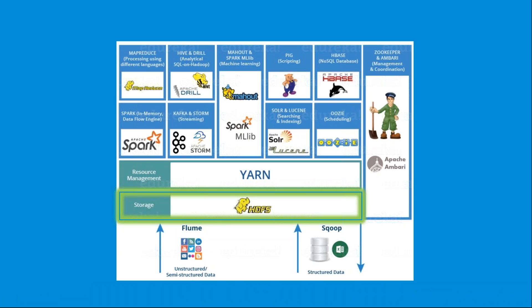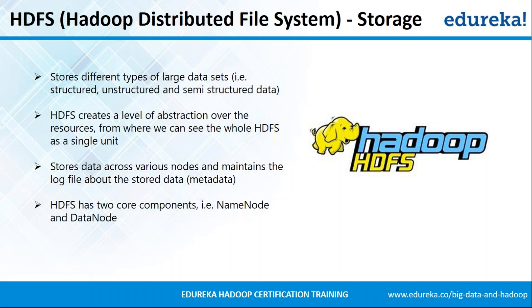The very first tool we'll understand is HDFS — Hadoop Distributed File System — which is the storage unit of Hadoop. HDFS is the entire Hadoop cluster formed by data nodes, which are commodity hardware that can be clustered together using the Hadoop framework. The entire file system created on which you can store big data is called the Hadoop Distributed File System. Using HDFS you can store any kind of data — be it structured, unstructured, or semi-structured.